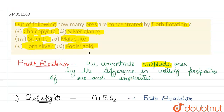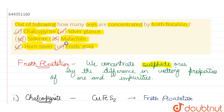Amongst all the options, the third, fourth, and fifth do not undergo froth flotation. The first, second, and sixth will undergo froth flotation — that is, chalcopyrite, argentite, and fool's gold.